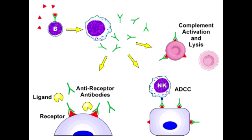What is Type 2 Hypersensitivity Reaction? Type 2 Hypersensitivity Reaction is Cytotoxic or Antibody-Mediated Hypersensitivity Reaction. In this, IgM or IgG will bind to a fixed antigen on enemy cells, leading to cellular destruction.